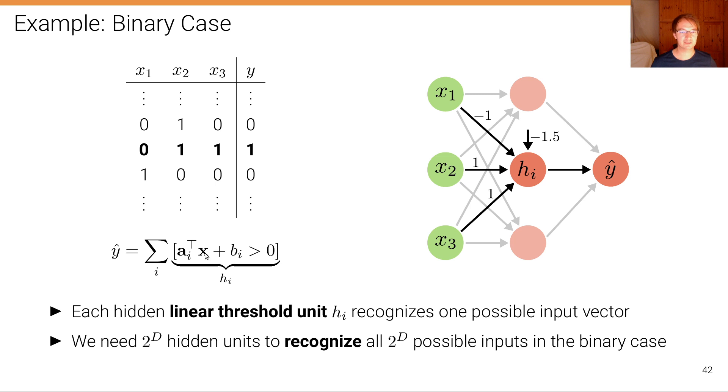So we write bold x to encompass all these variables x1 to x3, and this bracket here is called the Iverson bracket and it returns one if the argument is true and it returns zero if the argument is not true. So we are having basically a step function that steps from zero to one exactly when ax plus b becomes bigger than zero.